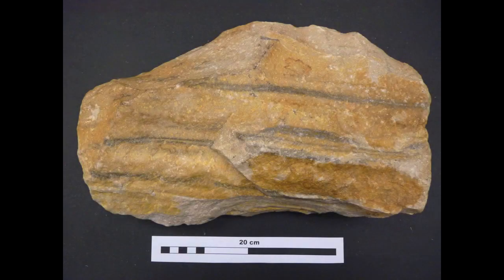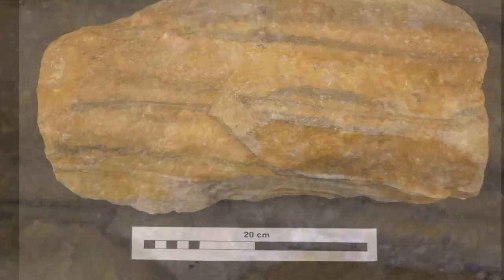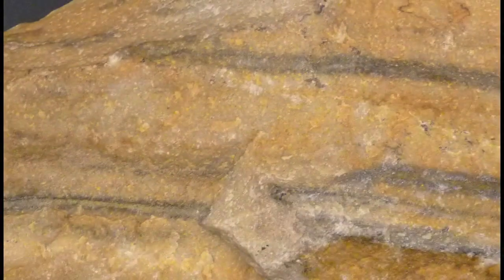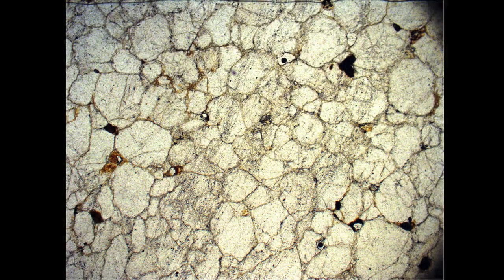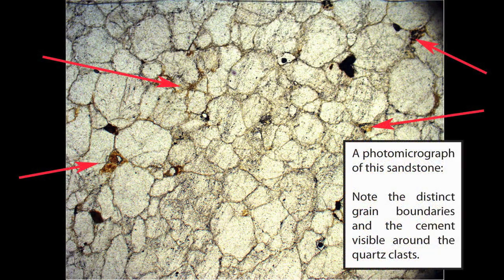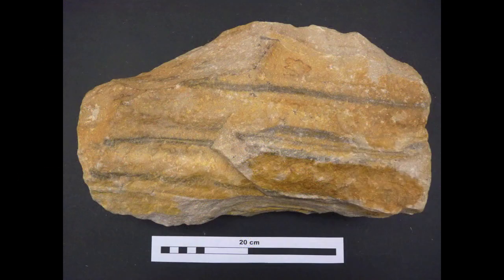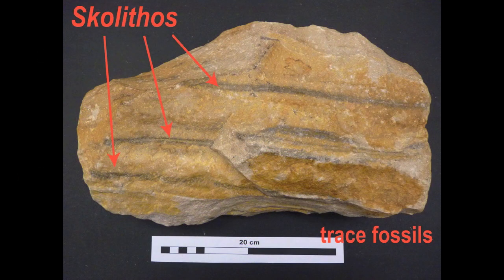So which is it? Well, let's look at the texture of the rock. This one's tricky because there isn't a whole lot of cement between the grains, but you can definitely still see quartz grains, especially with a hand lens. Let's take a look at the rock in thin section. Sure enough, the grains still have distinct boundaries, and in places you can see the cement holding the rock together. This is a sedimentary rock — these are scolithos burrows.